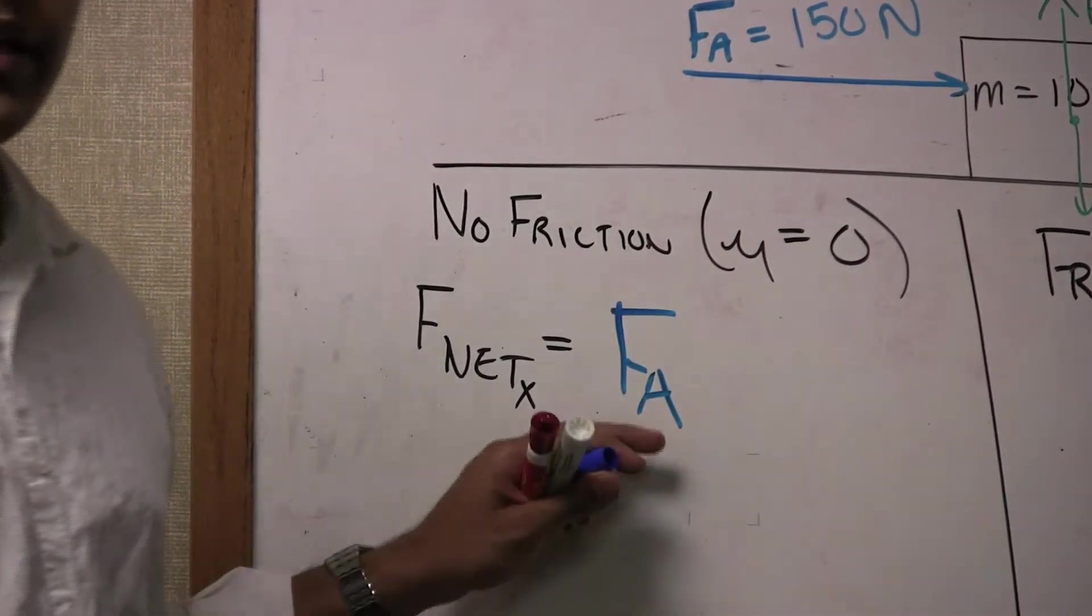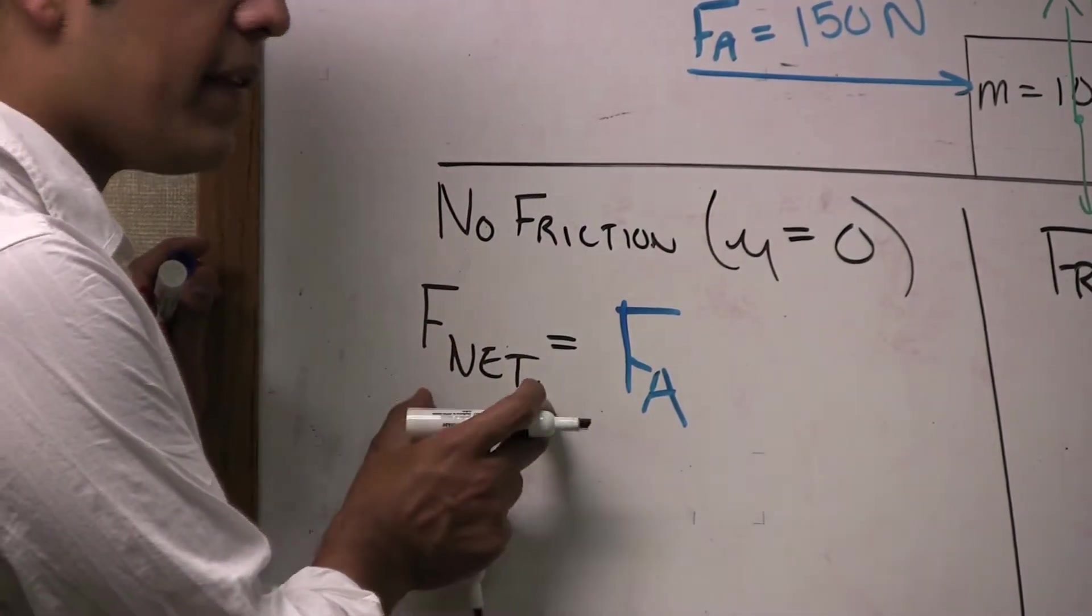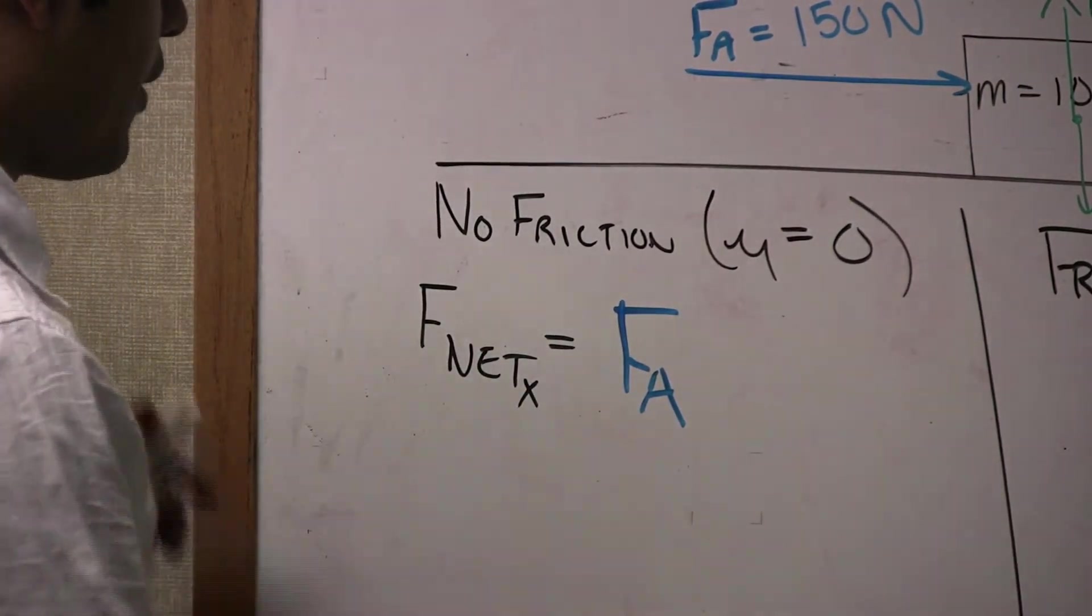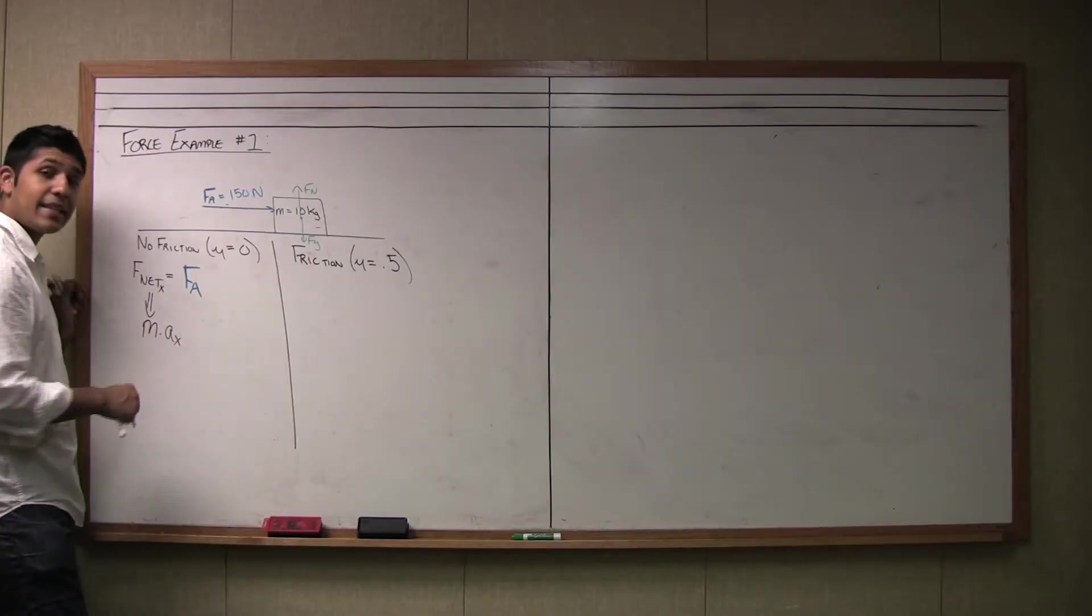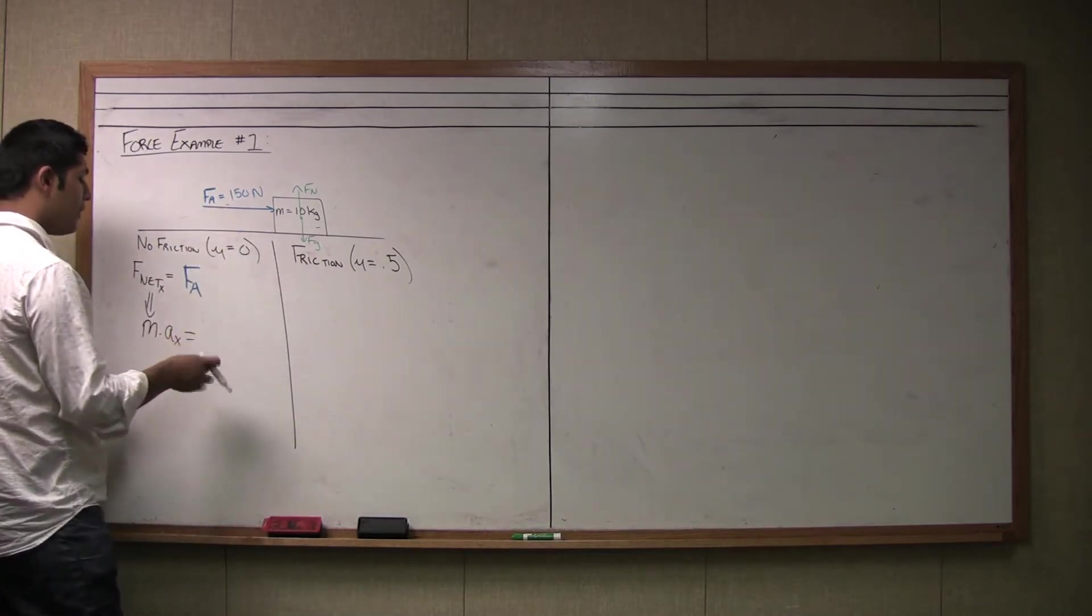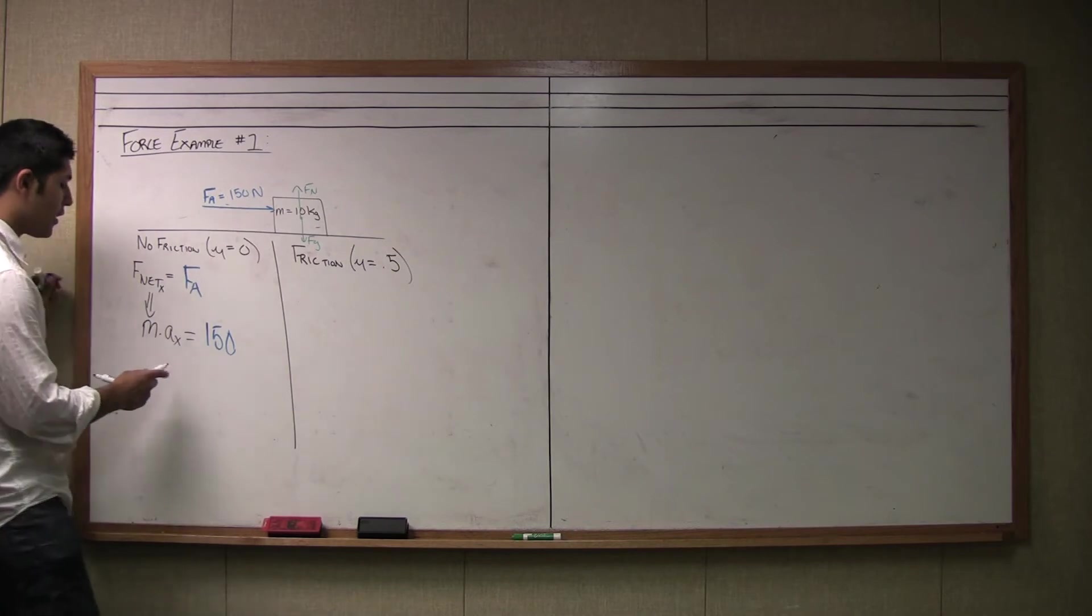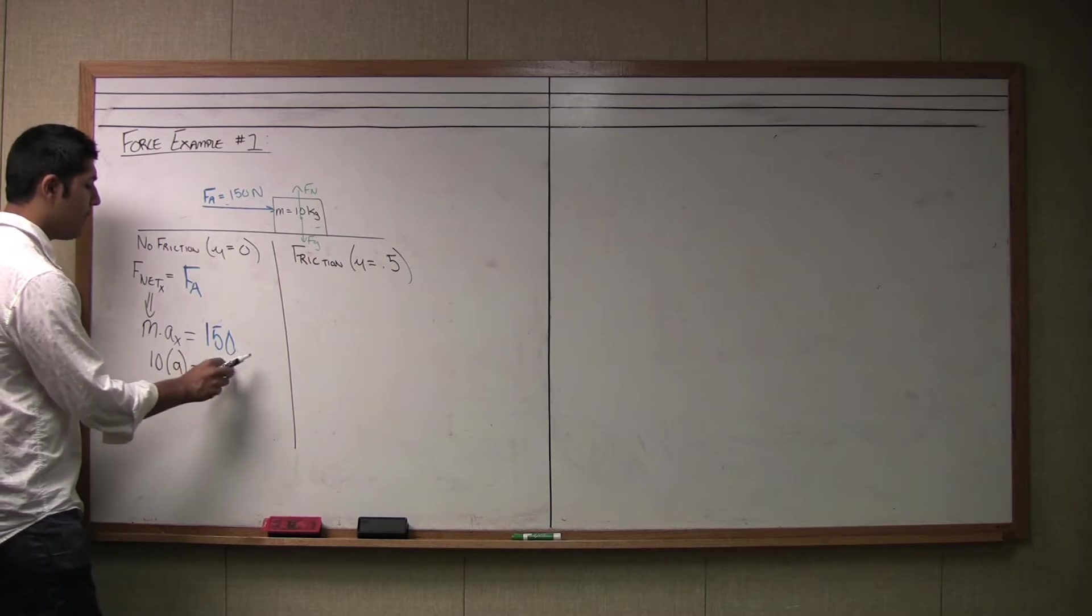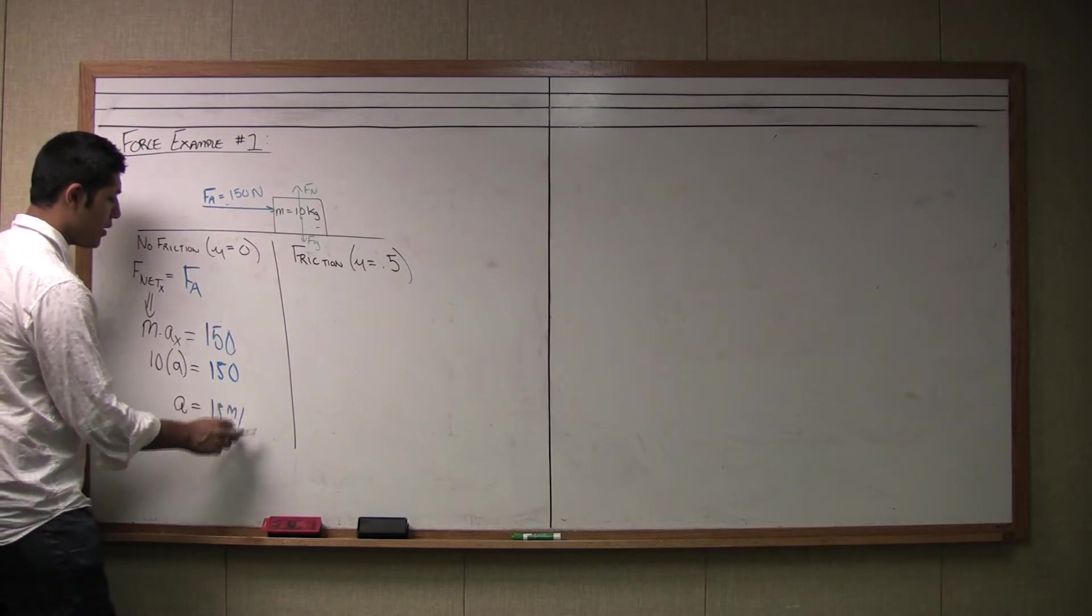This is the true physics behind it. The next step we are going to do is algebra and mathematical but if you can get to this point where you are saying the F net, all of the forces in the x direction equal just the applied force, you are good. Now we can expand and F net x is going to become mass times acceleration in the x direction because that is the definition of the net force. The applied force here is equal to 150 newtons. I can substitute the mass in here which is 10 kilograms and say 10 times the acceleration is equal to 150.